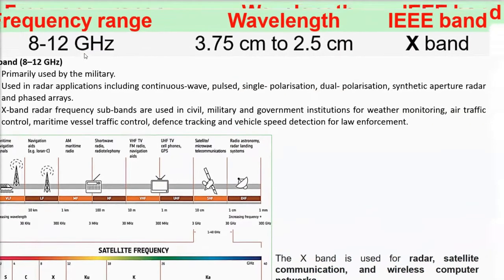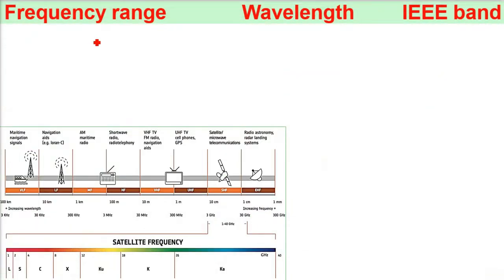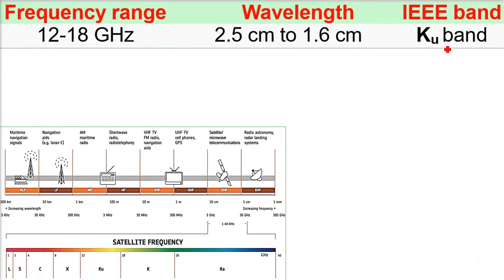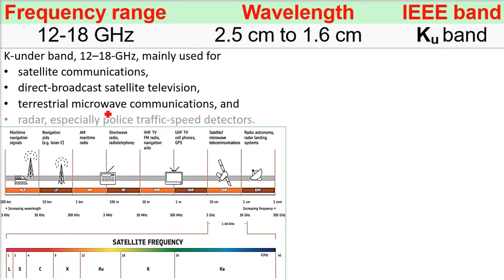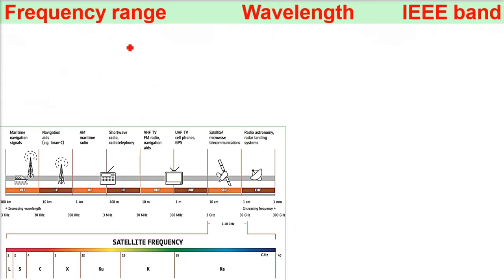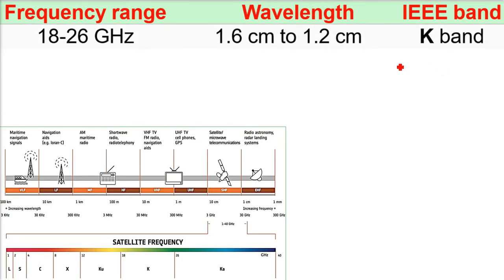L S C X. Now comes the Ku band. This is from 12 to 18 gigahertz, 2.5 centimeter to 1.6 centimeter. This K under band, satellite communication, direct broadcast satellite television, terrestrial microwave communication, and radar especially police traffic speed detectors. L S C X, then Ku.